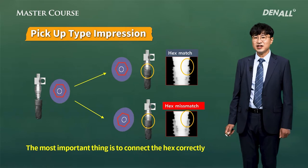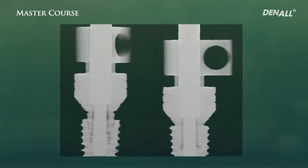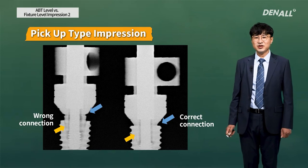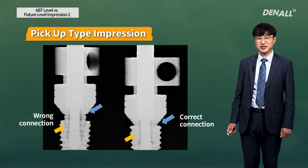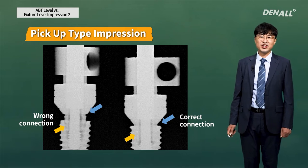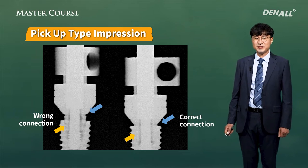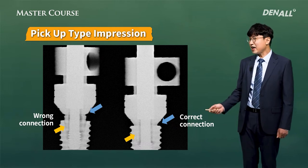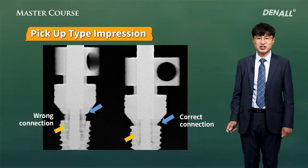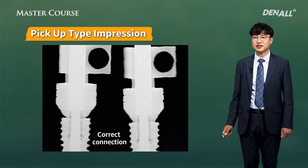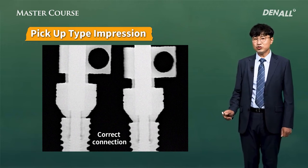The key part is correctly connecting the hex. One connection here is wrong — let's try to find out which one it is. Can you see it? It's an impression coping. There is a notch, and if there is a notch with some distance, that's a wrong connection. There is also a gap that can be used as an identifier to distinguish between wrong and correct connection. This is the correct connection. Even if the hex is wrongly seated, the screw can still be tightened — so you really have to be careful.